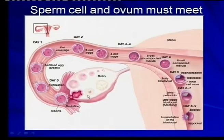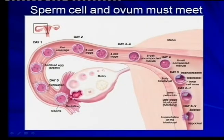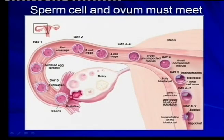What happens if fertilization does take place? Here you will see this very important process: the release of a mature ovum into the fallopian tube. You will see different names — the oocyte or the ovum — and this process is ovulation.